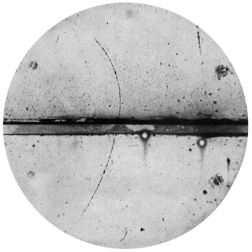In Wilson's original chamber, the air inside the sealed device was saturated with water vapor, then a diaphragm was used to expand the air inside the chamber via adiabatic expansion, cooling the air and starting to condense water vapor. Hence the name expansion cloud chamber is used. When an ionizing particle passes through the chamber, water vapor condenses on the resulting ions and the trail of the particle is visible in the vapor cloud.